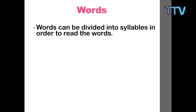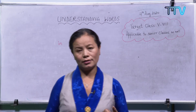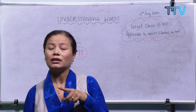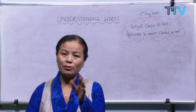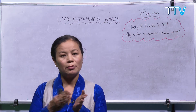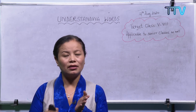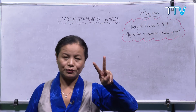Words can be divided into syllables in order to read them. When you read a word, you break it into syllables. If you remember our lessons on poetry reading and writing, we talked about rhythm, stressed and unstressed syllables, and counting syllables. For example, 'pen' has just one syllable. 'Pencil' is a single word, but we can break it into syllables — pen-cil — making it easier to read. 'Box' is one syllable, but 'boxes' has two syllables.